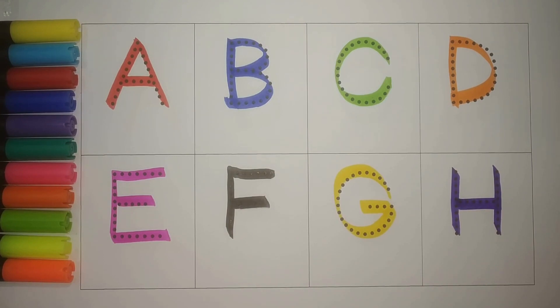Let's revise, chalo phir se karte hai. A, red, A for apple. B, blue, B for ball. C, green, C for cat. D, orange, D for dog.